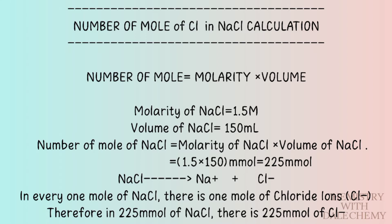The number of moles of sodium chloride is found to be 225 mmol. We establish that in every one mole of sodium chloride there exists one mole of chloride ion. Therefore, in 225 mmol of sodium chloride there exists 225 mmol of chloride ion.